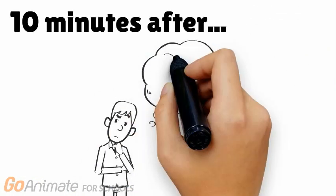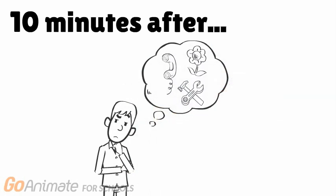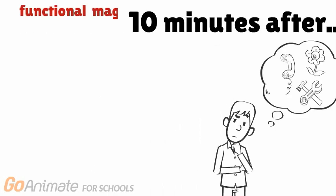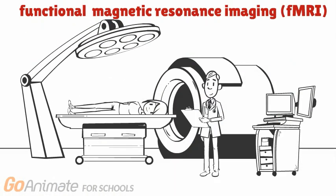the brain activity in the areas involved in memory functions were observed as the participants recalled the images. This was done using functional magnetic resonance imaging, which is a neuroimaging tool that scientists use to observe the relative activation areas in the brain in real time.